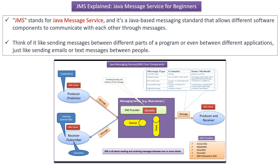In this video tutorial I will explain JMS. JMS stands for Java Message Service. JMS is a Java based messaging standard that allows different software components to communicate with each other through messages. We can think of JMS as like sending messages between different parts of a program or even between different applications, just like sending emails or text messages between people.